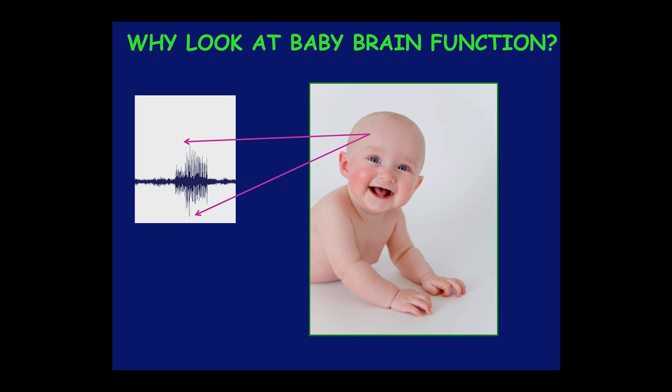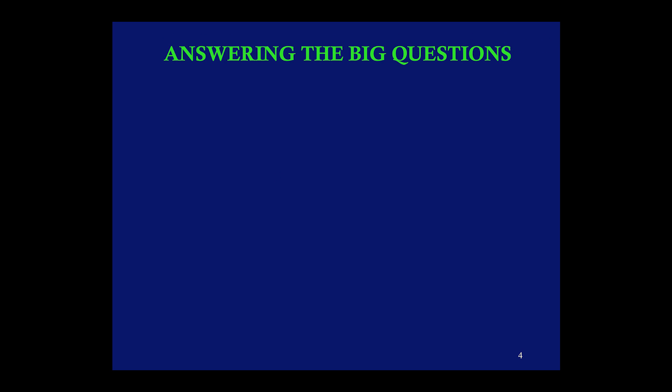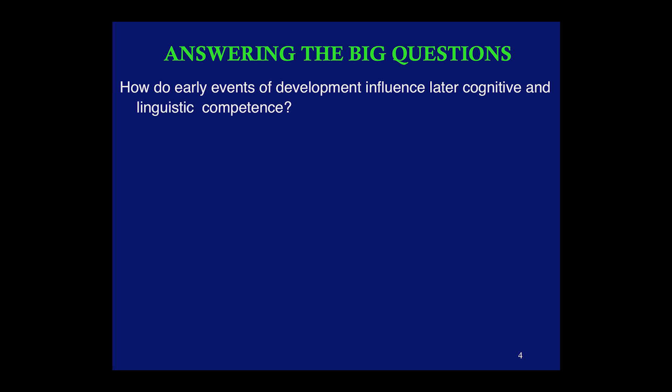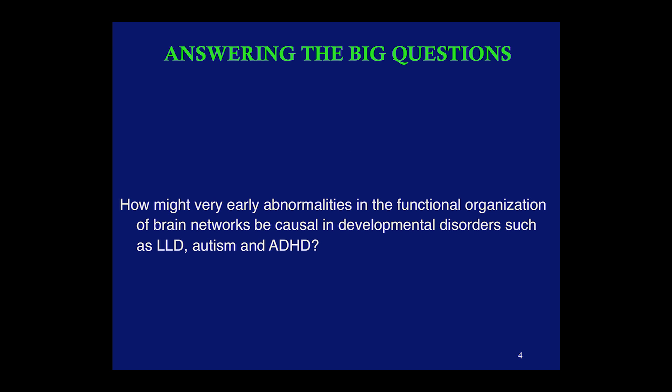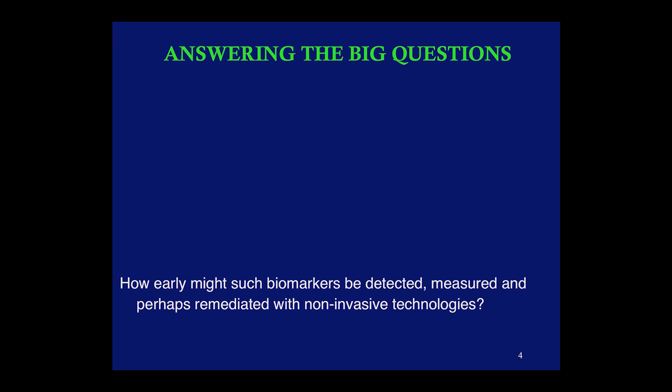So why look at baby brain function? Because while we watch this magical unfolding of early abilities across development, we can begin to answer some very big questions — including how do early events of development influence later cognition and competence, what risk factors during early development have consequences for adult behavior or disorder, how early abnormalities in the functional organization of brain networks can be causal in developmental disorders such as language learning disorder, autism, or ADHD, and importantly, how early might biomarkers be detected, measured, and perhaps remediated with non-invasive technologies?